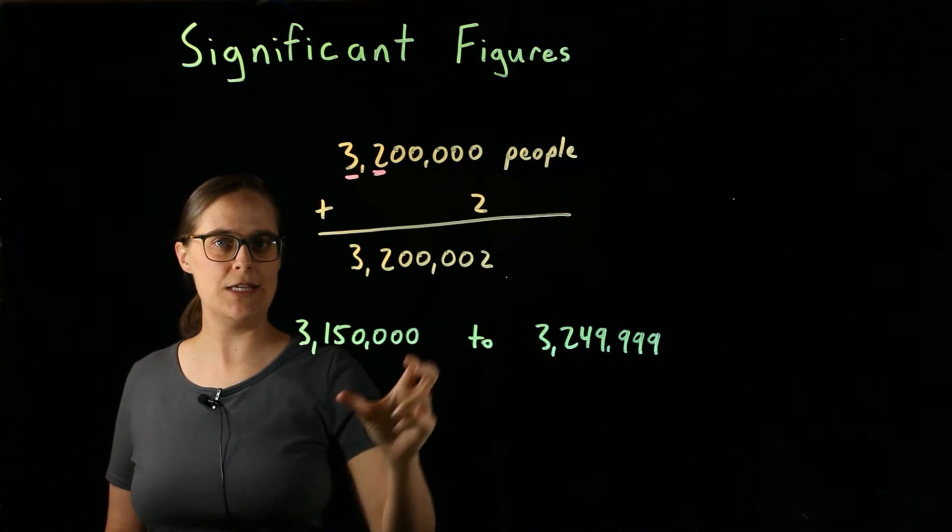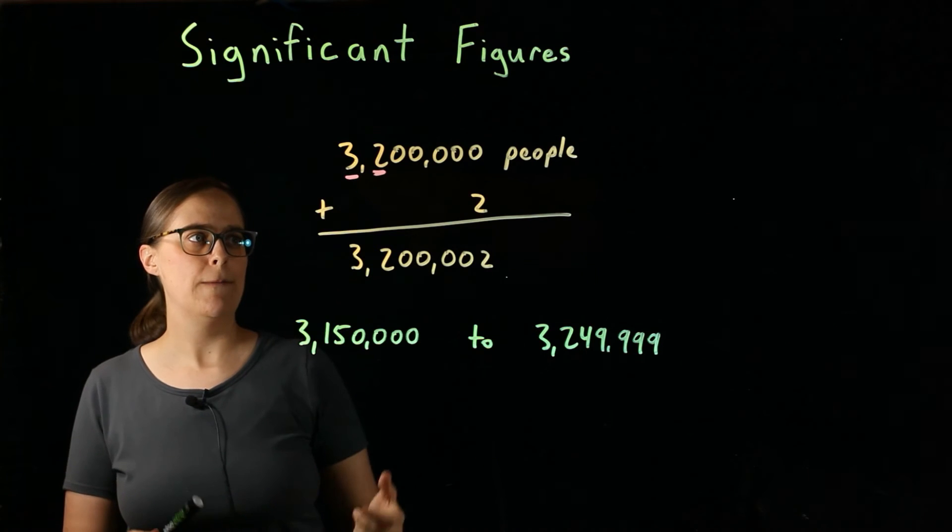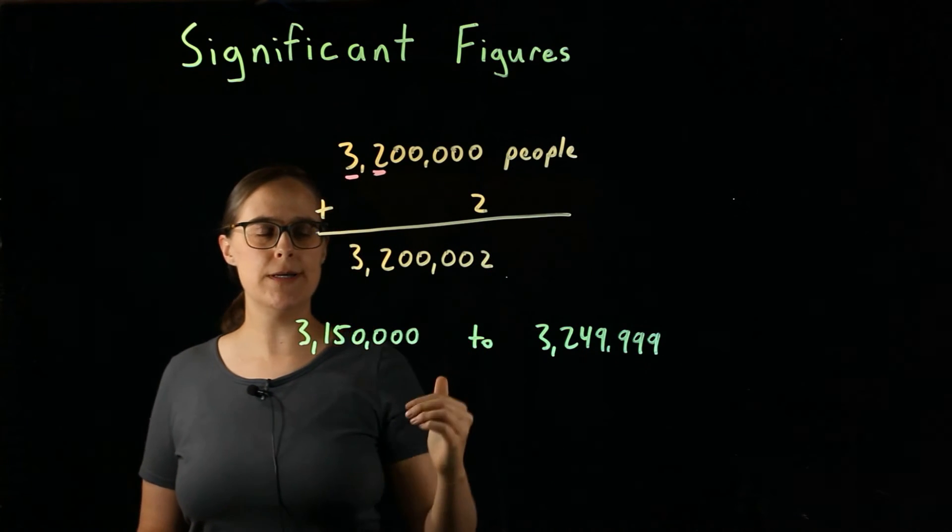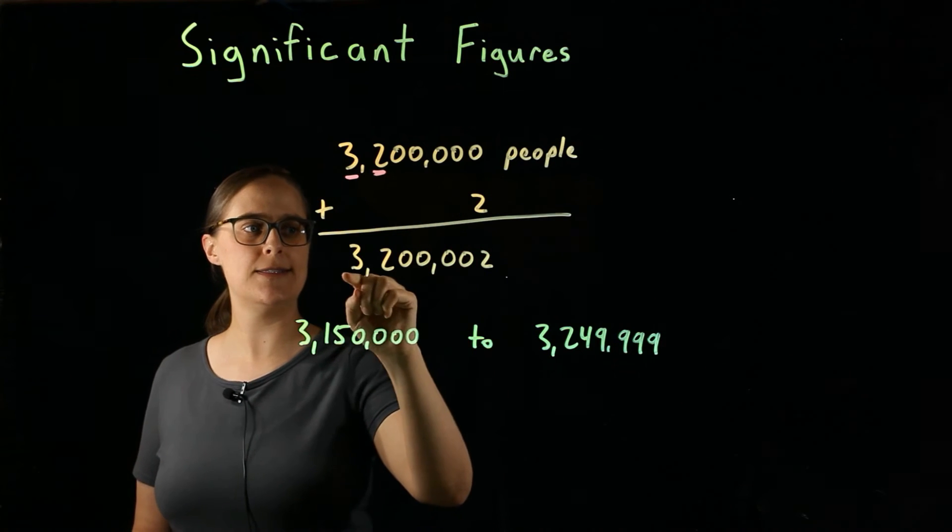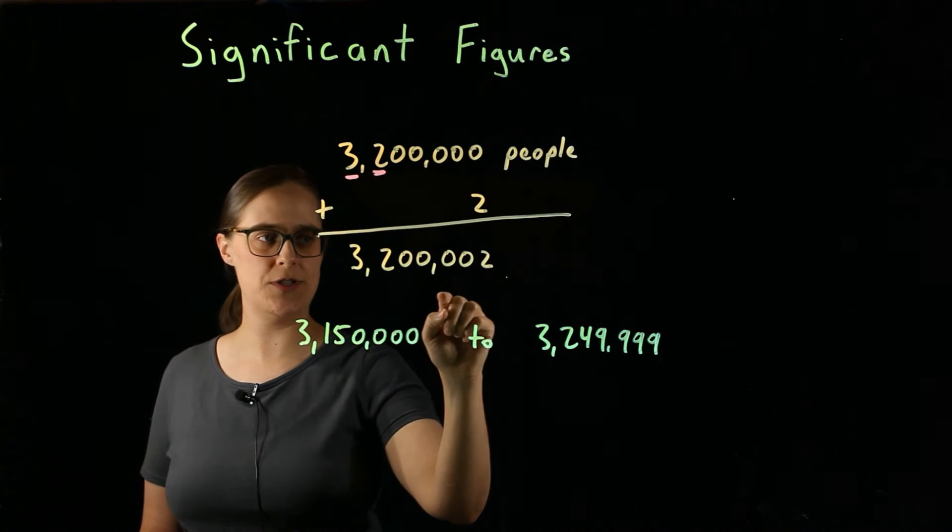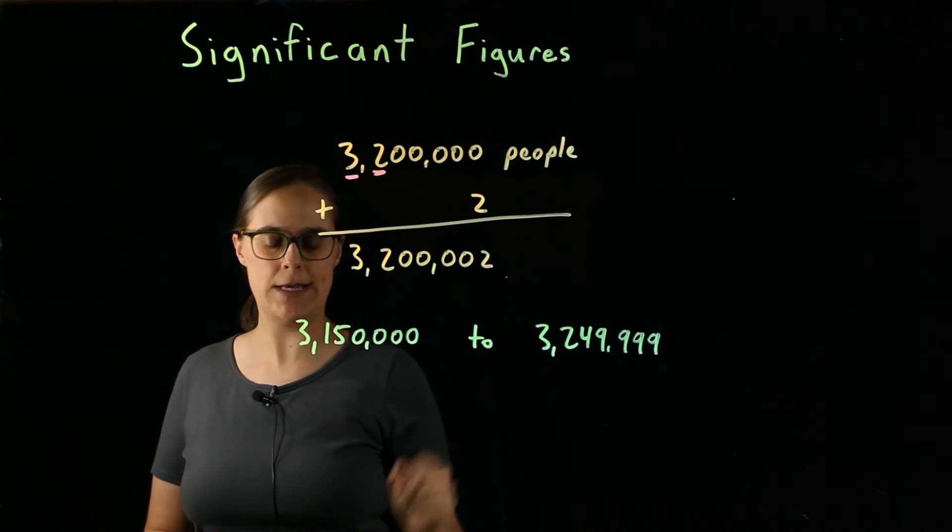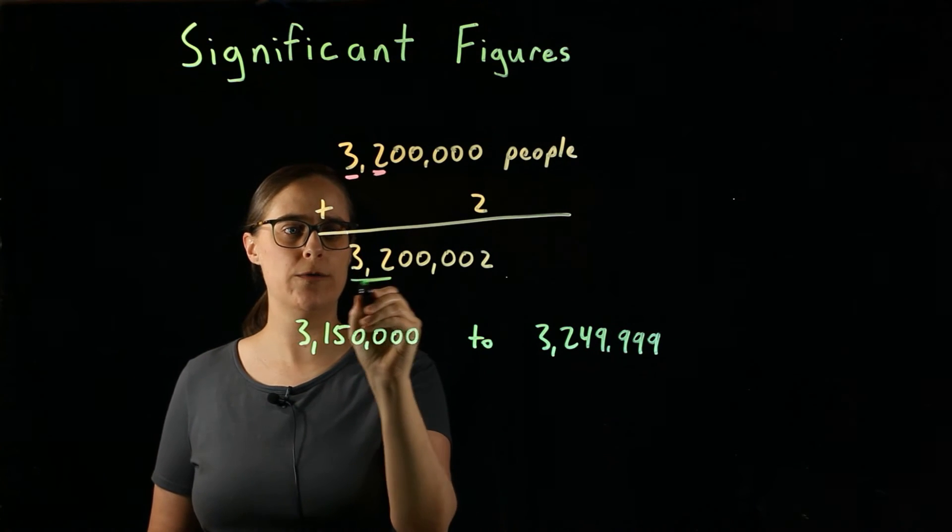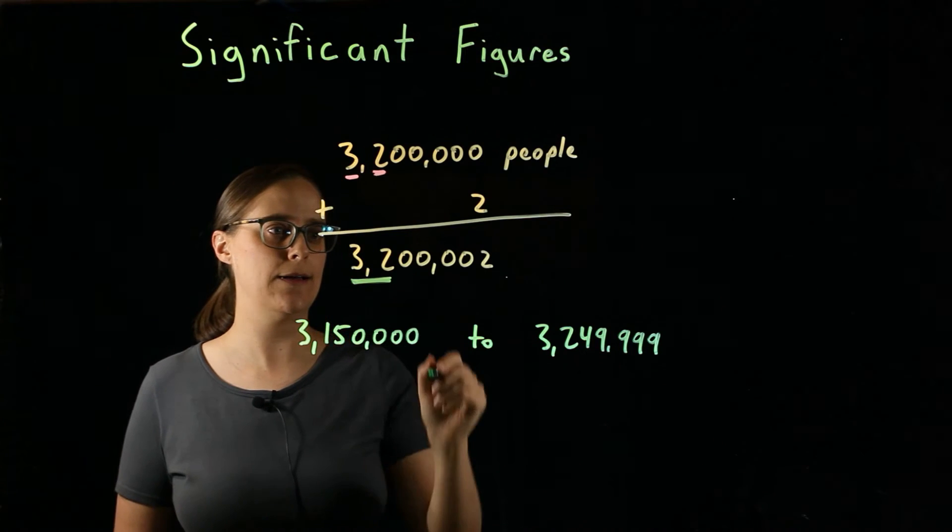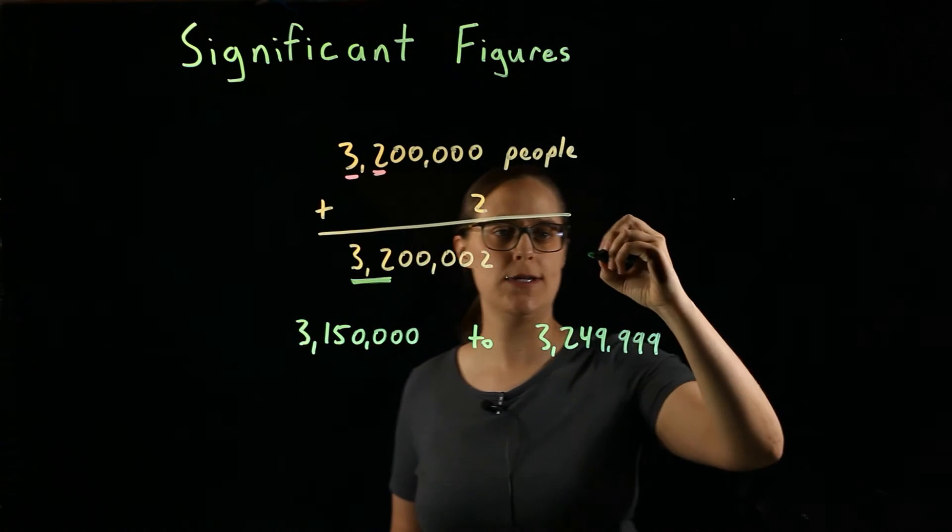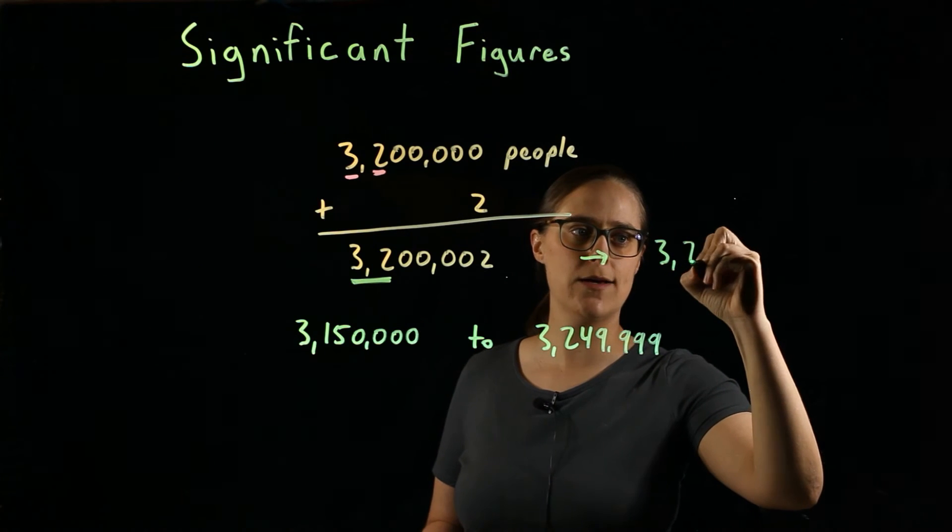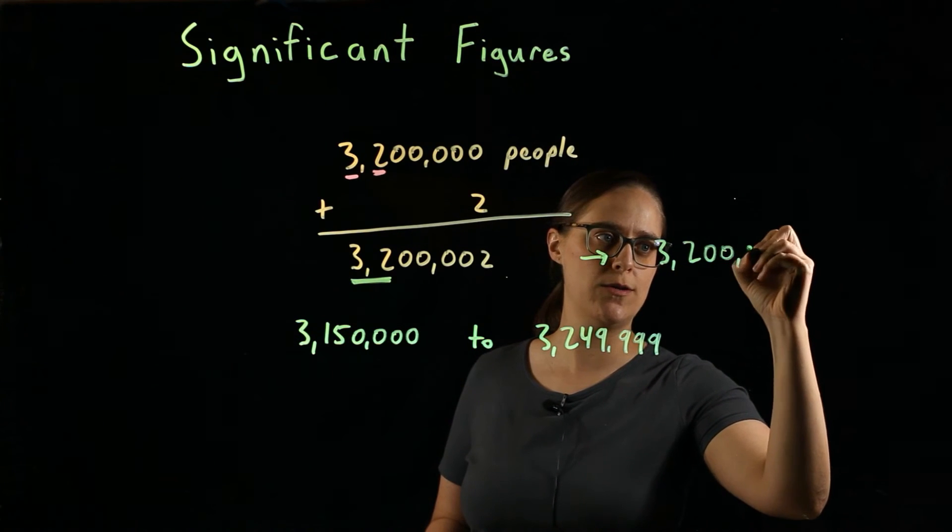So I mathematically calculated this correctly, but I need to recognize that there is now too much precision in this number. I don't actually know the 2 at the end. I still only know the 3 and the 2 at the beginning. I'm going to need to round this answer that I calculated, and it's going to round back to 3,200,000.